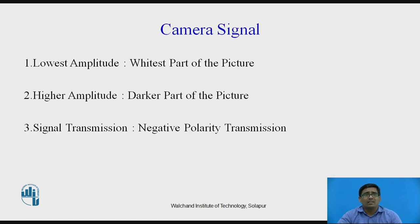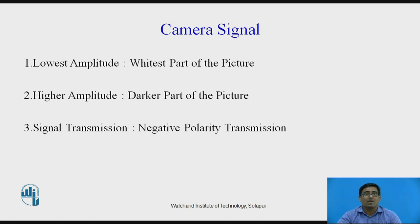The camera signal has its lowest amplitude corresponding to the whitest part of the picture, and higher amplitude corresponds to the darker part of the picture. The camera signal is transmitted using negative polarity transmission. There are two types of transmission: negative polarity and positive polarity. Basically, 99% of the time negative polarity transmission is used because it has advantages over positive polarity transmission.